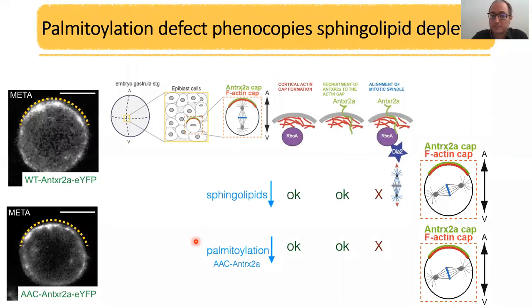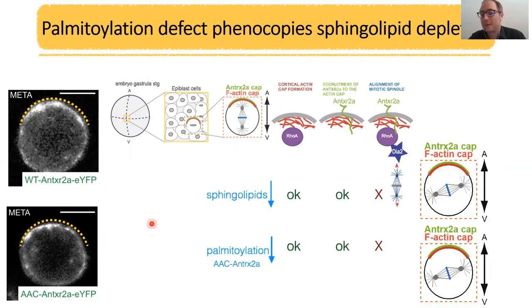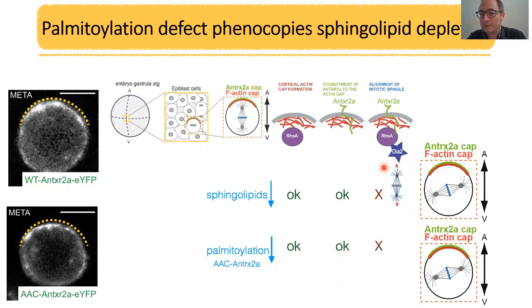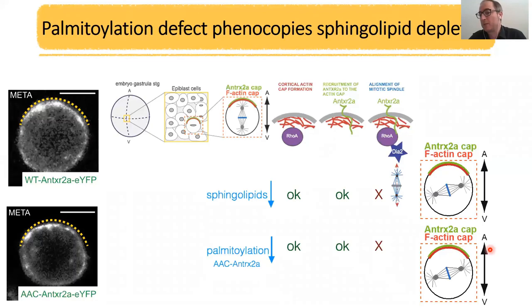Our collaborators from the van der Khod lab showed that the human anthrax toxin receptor is indeed palmitoylated, and they could also show that the zebrafish anthrax toxin receptor is palmitoylated. If one mutates two of the three possible cysteines that get palmitoylated, you interestingly get the same phenotype as with the sphingolipid knockdown. The actin cap is okay, the anthrax toxin receptor cap is okay, but when you down-regulate the palmitoylation of the anthrax toxin receptor by mutating these cysteines, the spindle doesn't get pulled in and you get divisions not aligned with the caps and therefore not aligned with the embryonic axis.